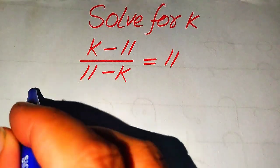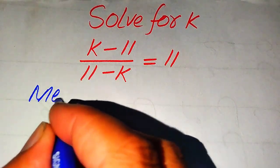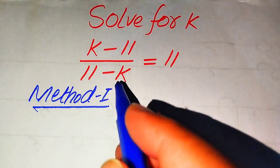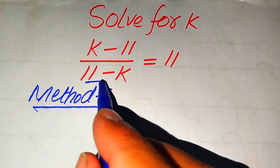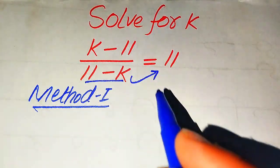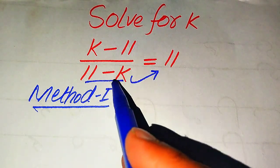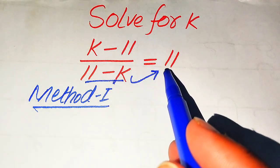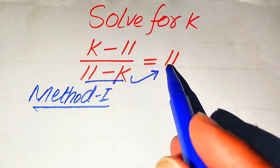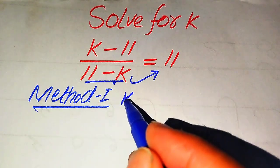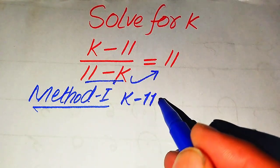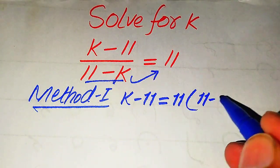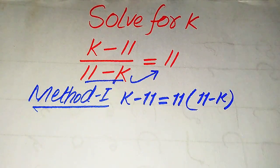In the first method, we move the denominator term to the right-hand side. You see that (11 minus k) is in the denominator on the left-hand side, and when we move it to the right-hand side it is multiplied by 11. So after moving it, we get: k minus 11 equals 11 multiplied by (11 minus k).